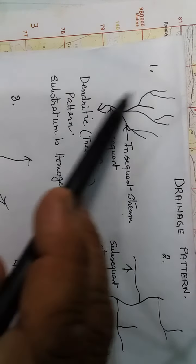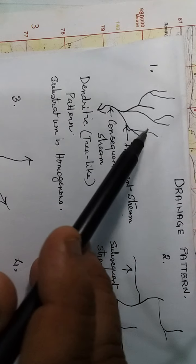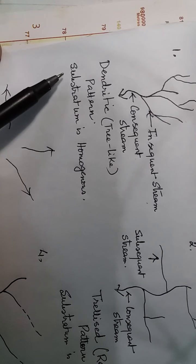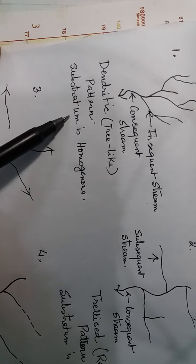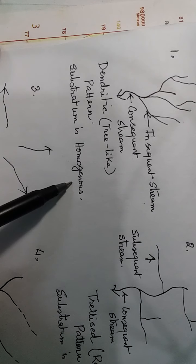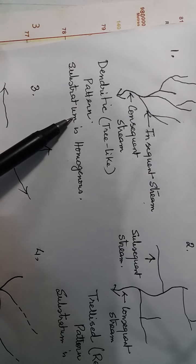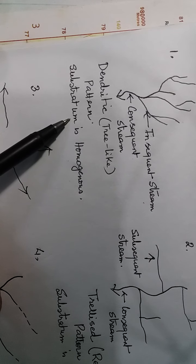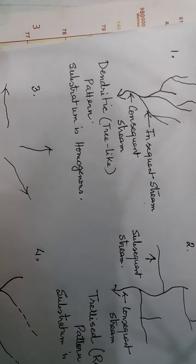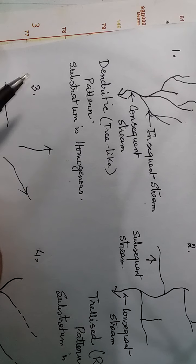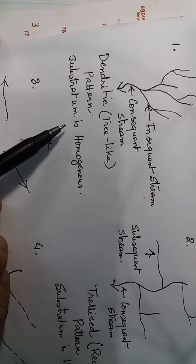The dendritic pattern is the most common type and is normally found in areas where the substratum is homogeneous — meaning the underlying rocks are of the same type. If the rock is hard, it is hard everywhere; if soft, it is soft everywhere.